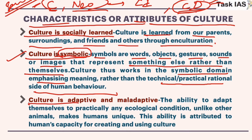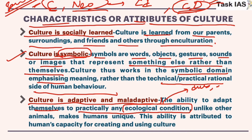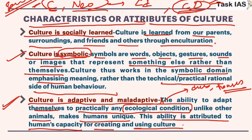Culture is adaptive and maladaptive — humans have the ability to adapt to practical and ecological conditions. In ecological anthropology, different cultural practices like types of dress, food patterns, or houses like the igloo result from different cultures that help adaptation to extreme environments, making humans unique among animals. This ability is attributed to the human capacity for creating and using culture.